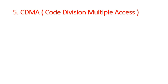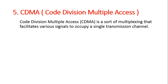Fifth is CDMA — Code Division Multiple Access. CDMA is a form of multiplexing, which is many-to-one, that facilitates various signals to occupy a single transmission channel. The signals are sent over this single transmission channel using the CDMA technique.